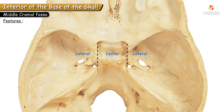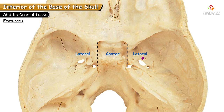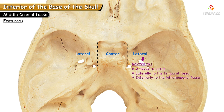The lateral part of the middle cranial fossa lodges the temporal lobes of the brain. These areas are deep and uneven because they are related to the sulci and gyri of the temporal lobes. Anteriorly, this lateral area is related to the orbit; laterally to the temporal fossa; and inferiorly to the infratemporal fossa.